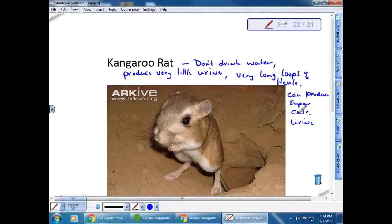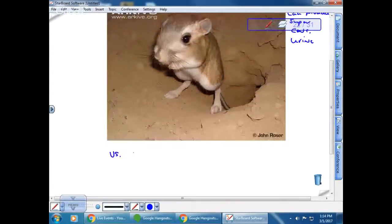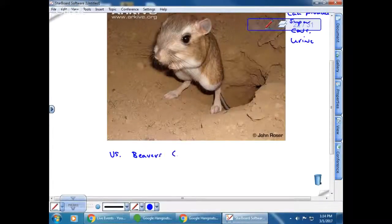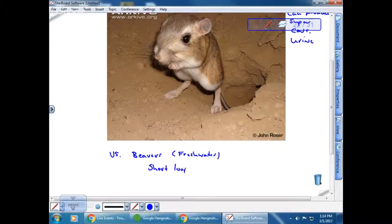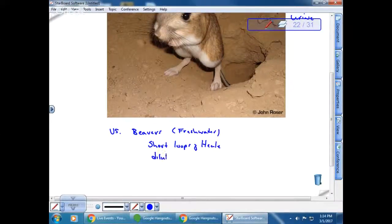This is an extreme example. If you think about beavers, they actually do not have long loops of Henle. When you compare this to a beaver, they are freshwater. They drink lots of water and produce very dilute urine. They have short loops of Henle, and their urine is not nearly as concentrated. We even see physiological adaptations in the kidney to different ecosystems. This would be a physiological adaptation.